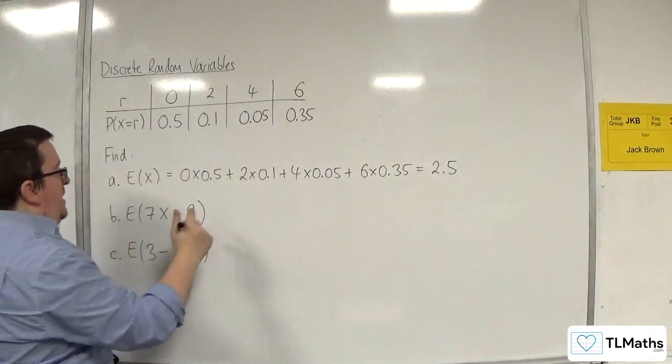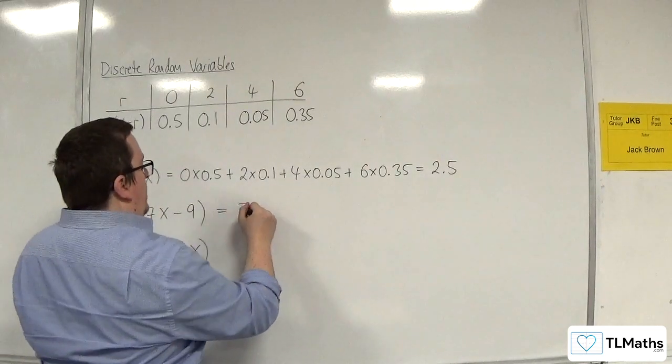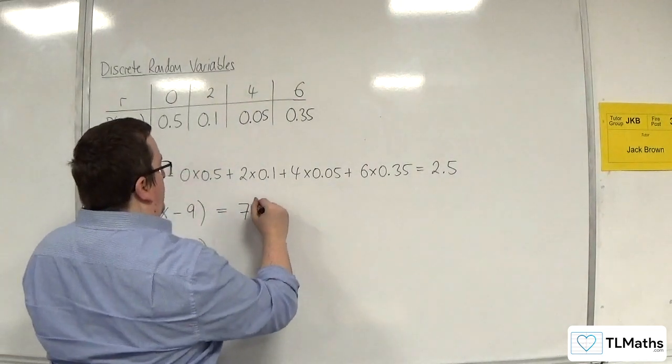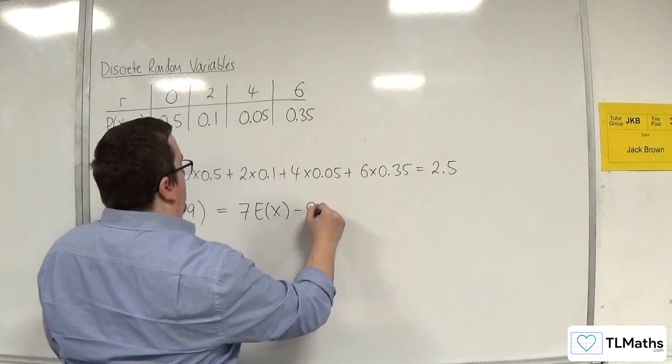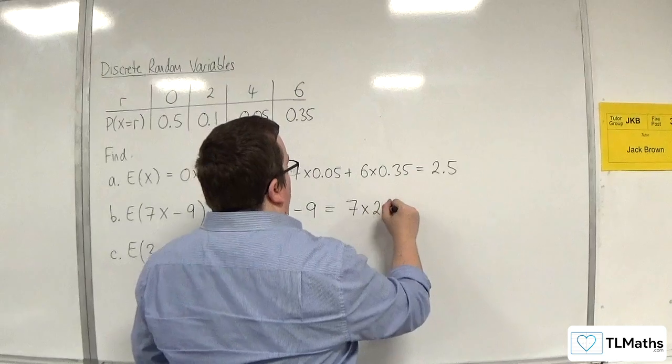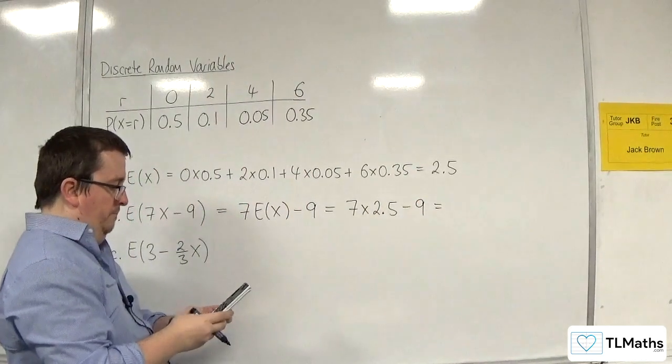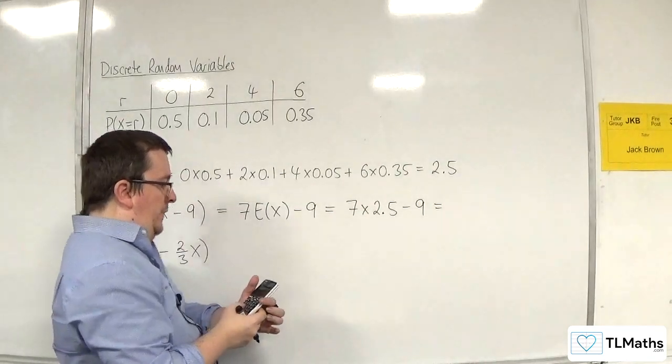So next up, E of 7x take away 9. So we know that from before we can write that as 7 times E of x take away 9. So that is 7 lots of 2.5 take away 9. And that gets us 8.5.